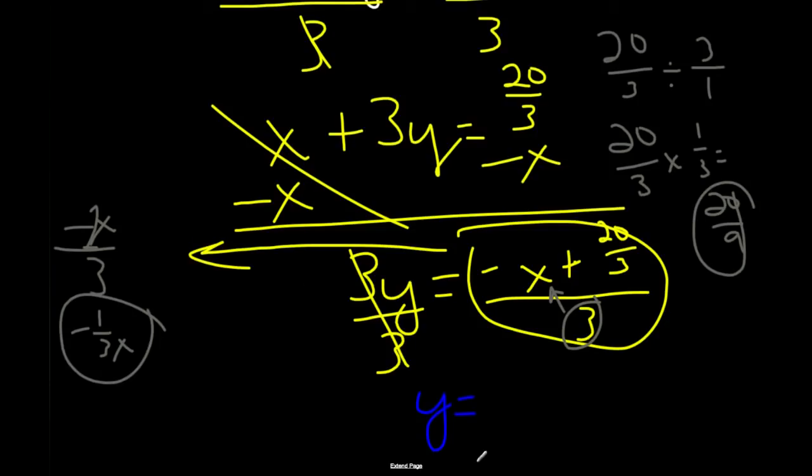Well, 20 thirds divided by 3. And if you recall from your basic math, how do we divide fractions like this? Well, we flip the second number and we multiply. So we're going to get 1 third. So this becomes 20 divided by 9. So 20 ninths. And then negative 1 third x. So we're going to have to write that into your answer. Y equals negative 1 third x plus 20 ninths. And if you're wondering, I've got my calculator right now, 20 ninths reduces to 2.22. So x and y relate in that way.